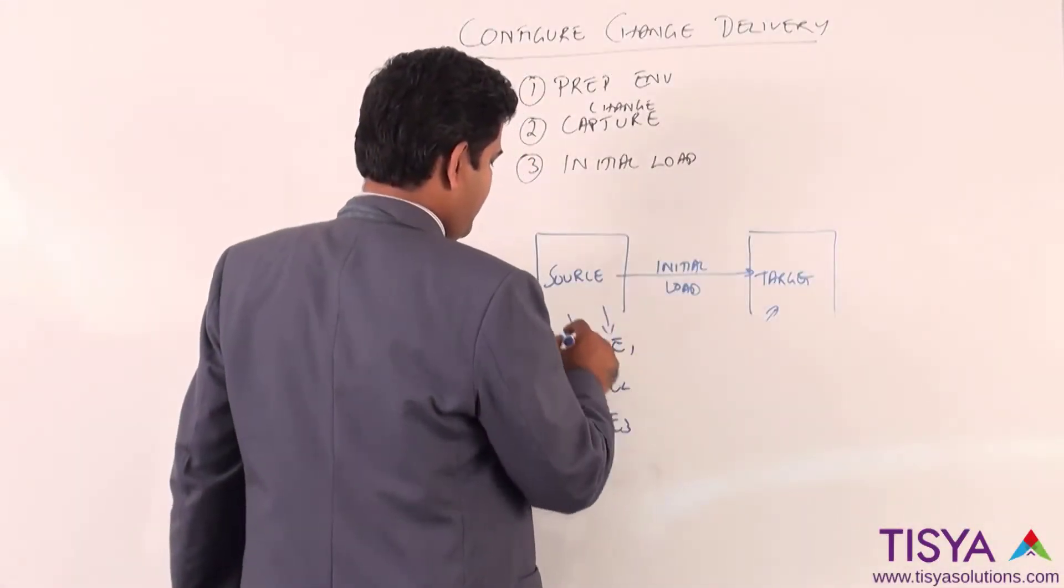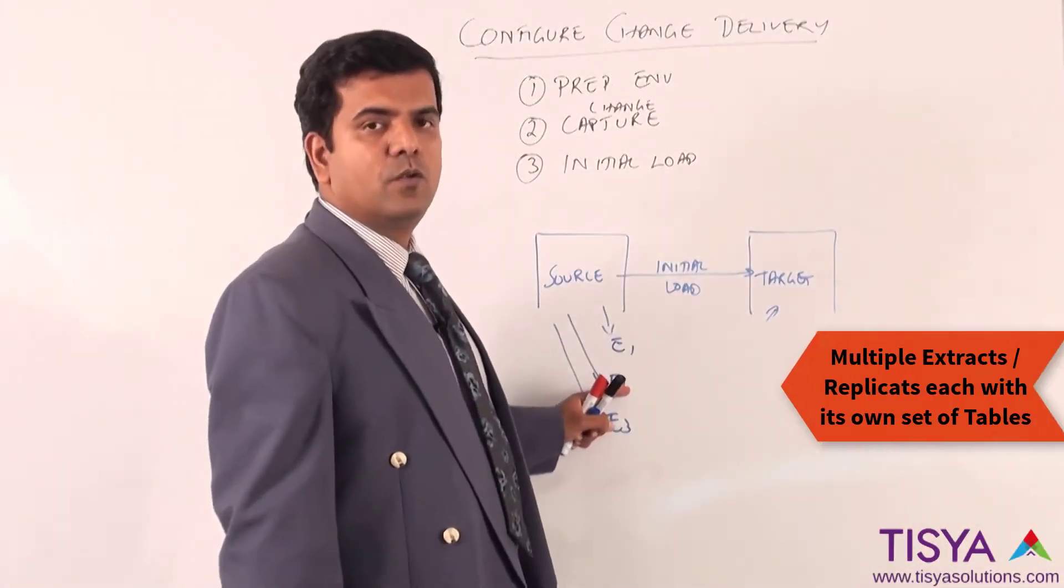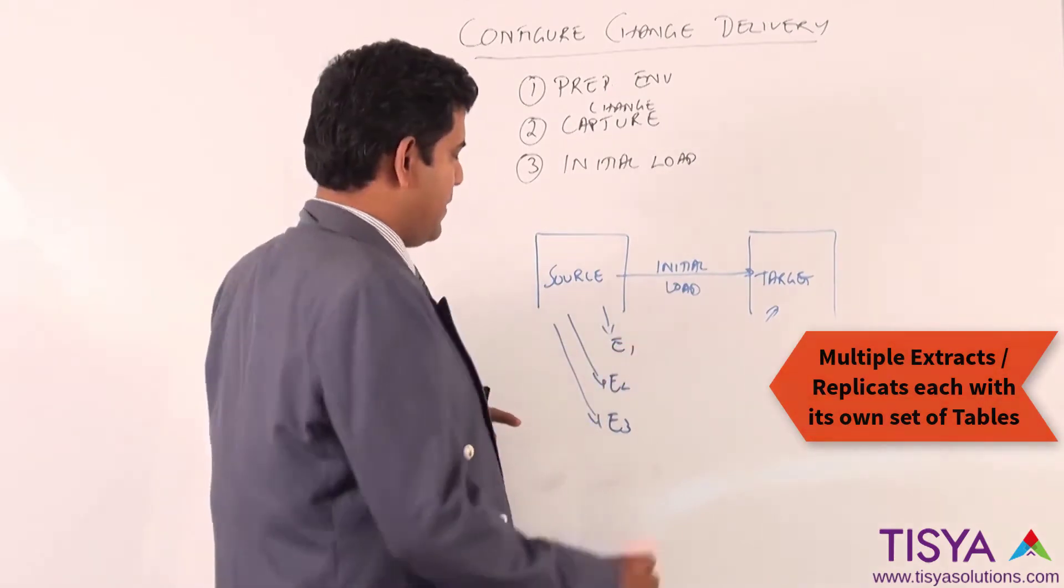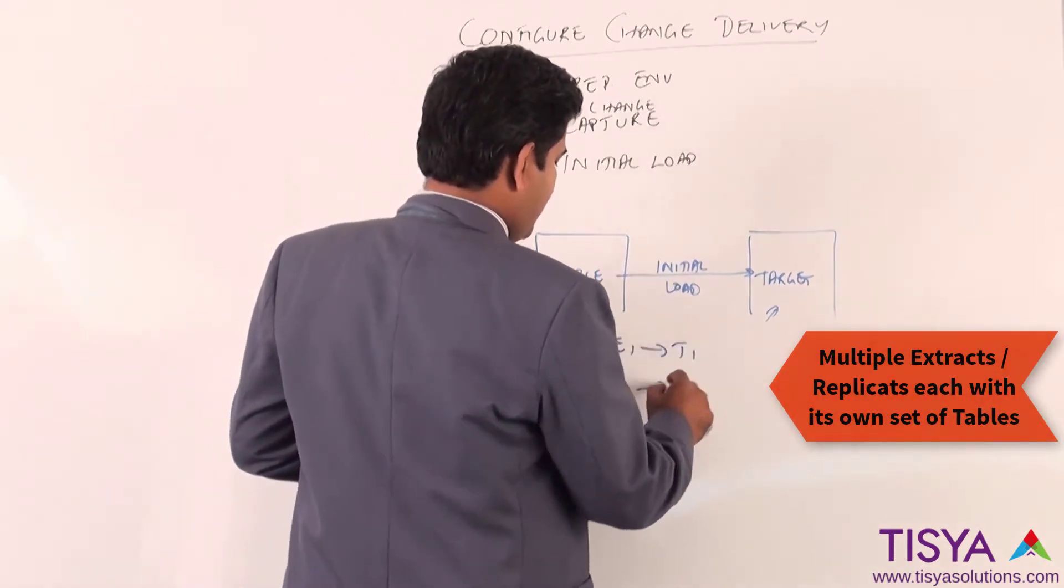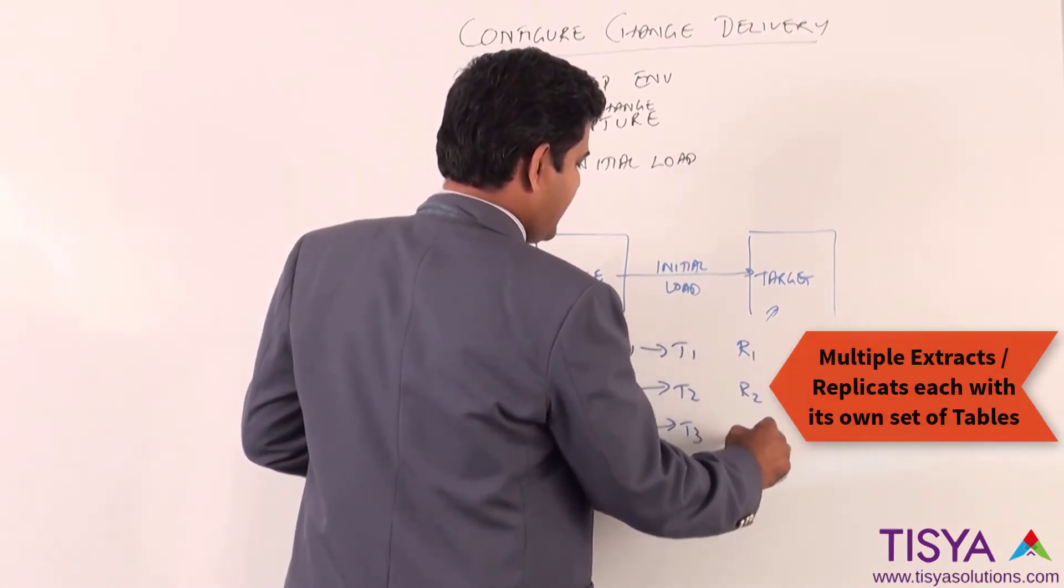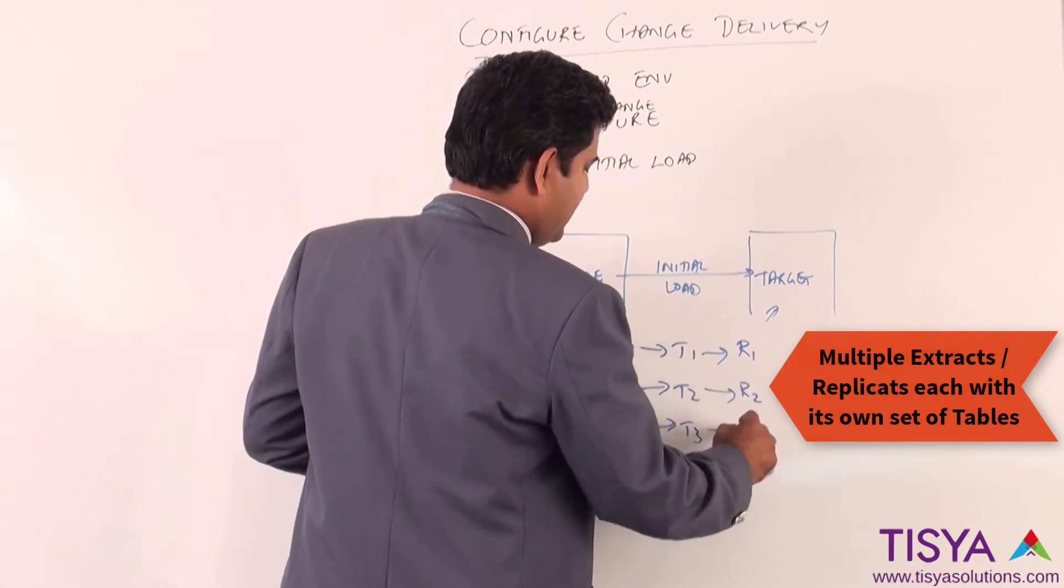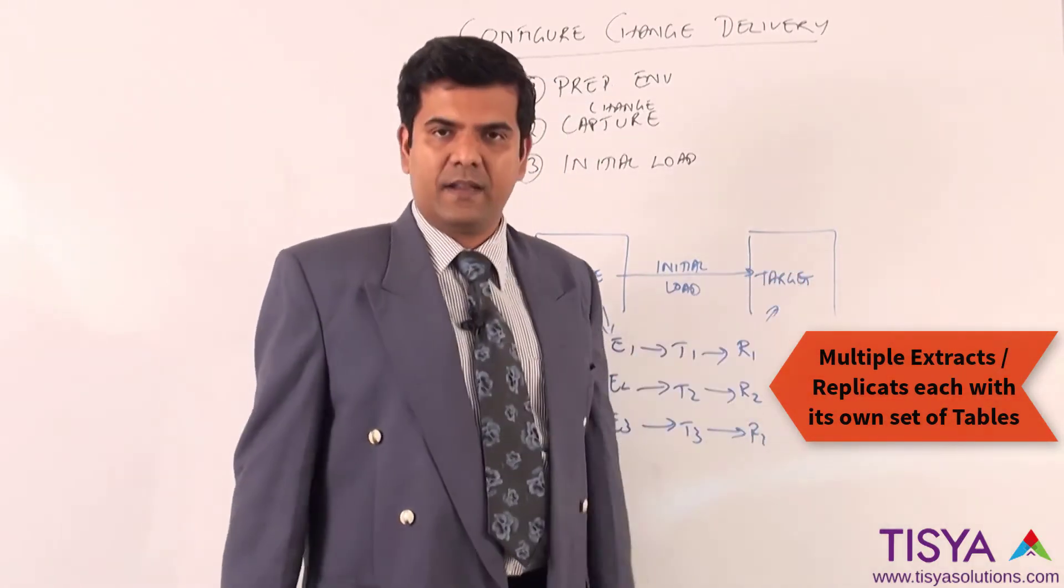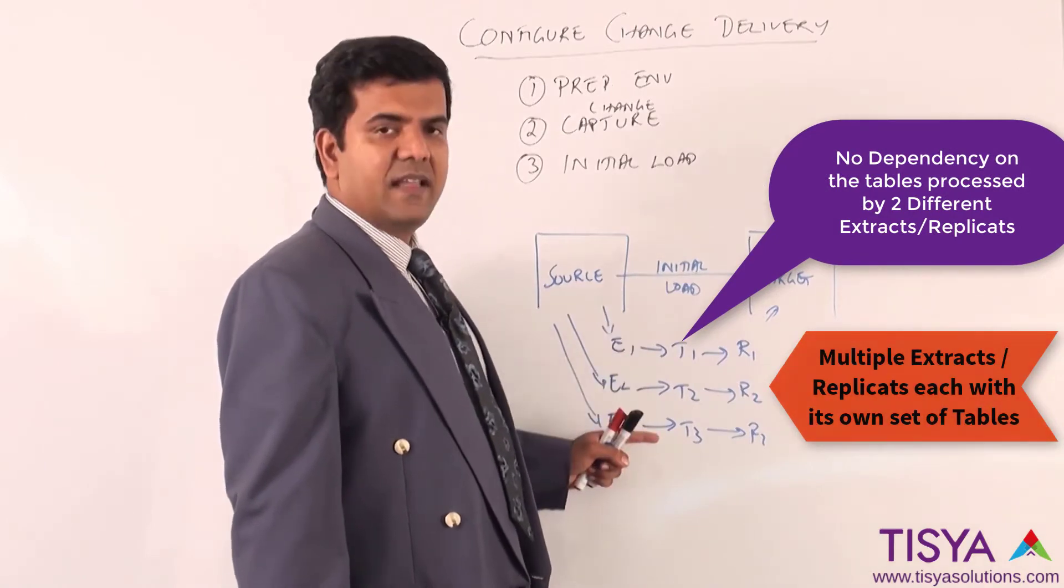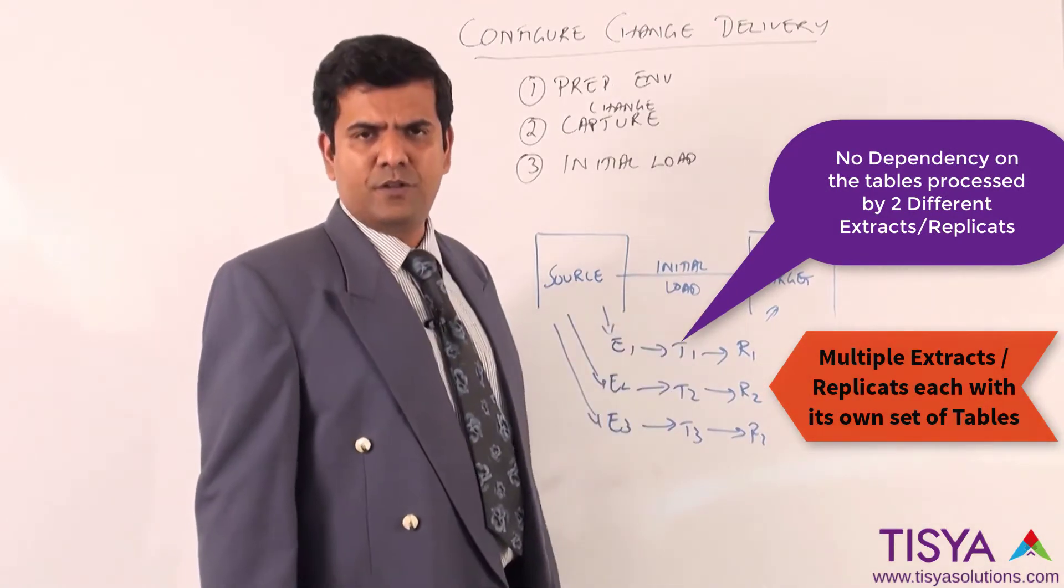One option is to have different extracts running which gather data from different tables or different schemas. Each one will write their own trail, and I could have a specific replicate to read from each of these trails and apply it on the target, provided there is no dependency between the data from the three extracts. This is a good option.